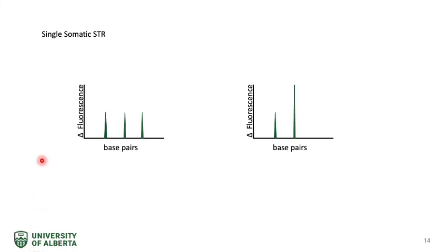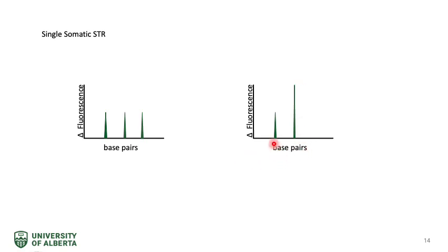The electropherogram with two peaks of the same height represents diallelic disomy and occurs when the individual is heterozygous for the target STR. For trisomy, three peaks of the same height indicate three copies of the STR from three different chromosomes. Alternatively, if the individual is homozygous for one of the three chromosomes, the pattern shows two peaks with one peak twice as tall as the other. Both patterns represent trisomies — the triallelic trisomy and the diallelic trisomy.